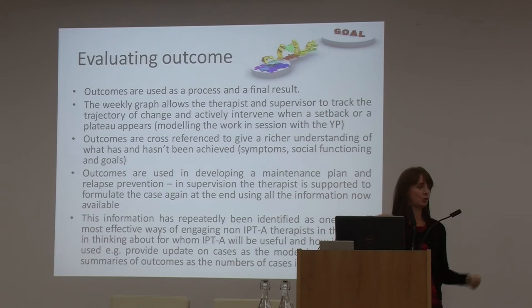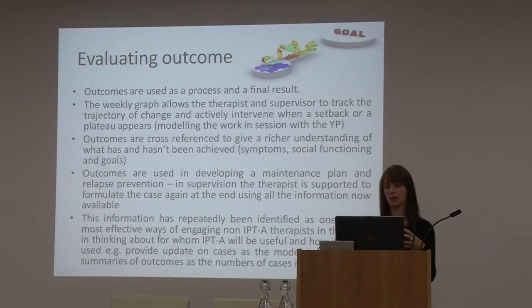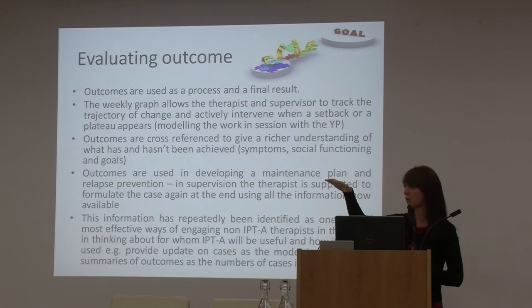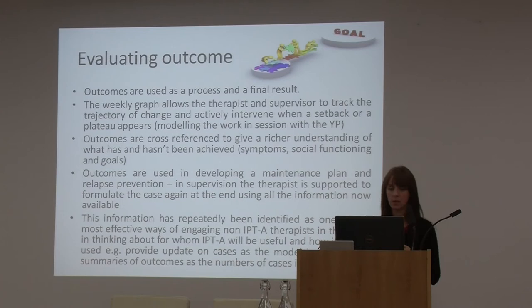When it comes to evaluating outcomes - which is sometimes what ROMs get reduced to, that sense of there's a finishing line and did you cross it - hopefully what I've been saying suggests there's a lot more up until that point. Even with outcomes, we'd be using them as a process as well as a final result. That graph we follow across all the weeks: are we on track to cross that final line? And when do we pick up on setbacks or plateaus so we're working with those as early as possible?